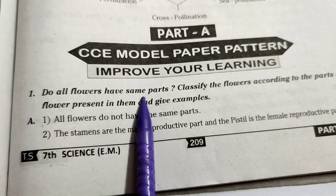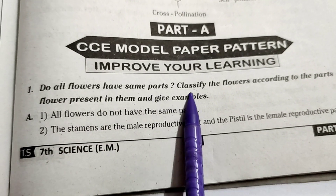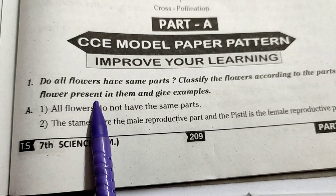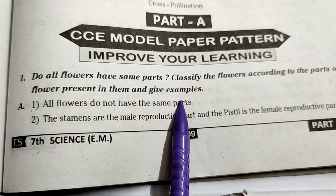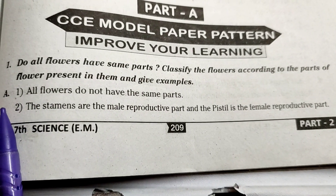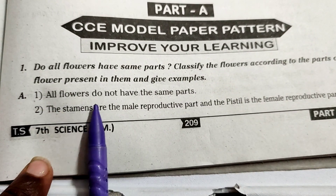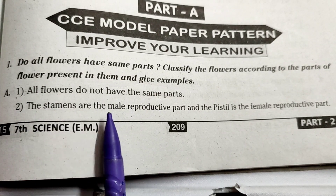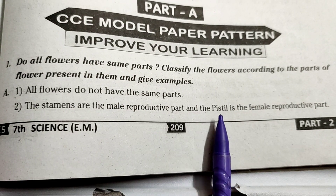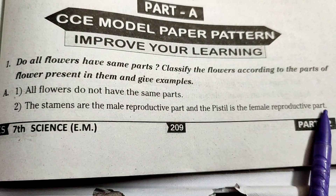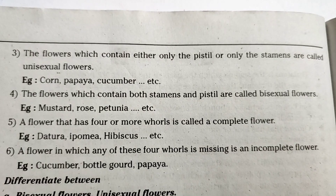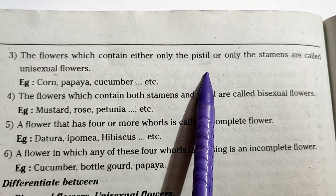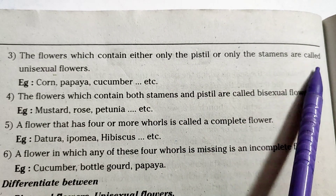Do all flowers have the same parts? Classify the flowers according to the parts present in them and give examples. All flowers do not have the same parts. The stamens are the male reproductive part and the pistil is the female reproductive part. Flowers which contain either only the pistil or only the stamens are called unisexual flowers.